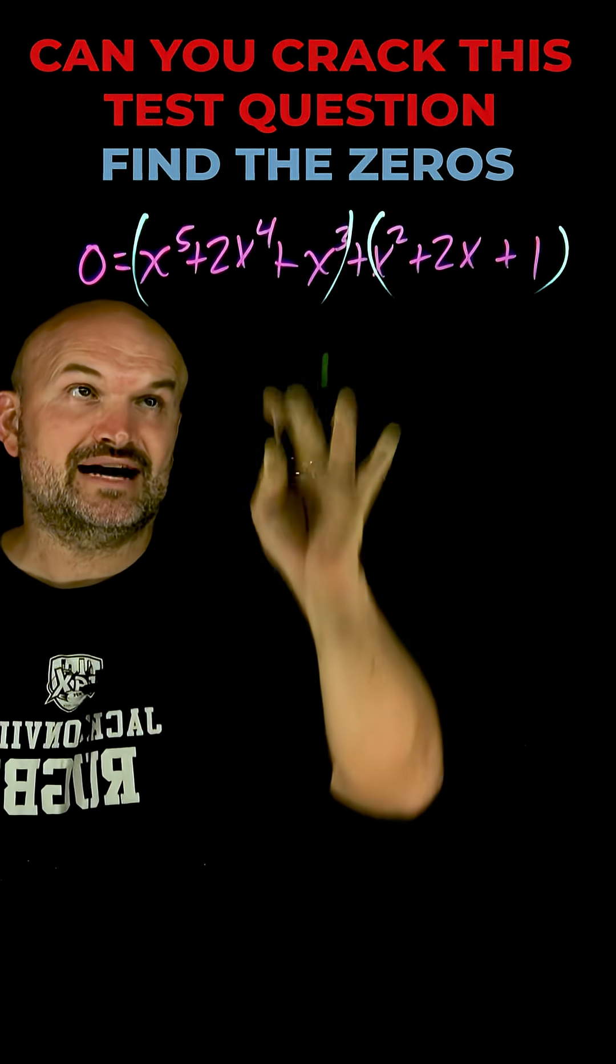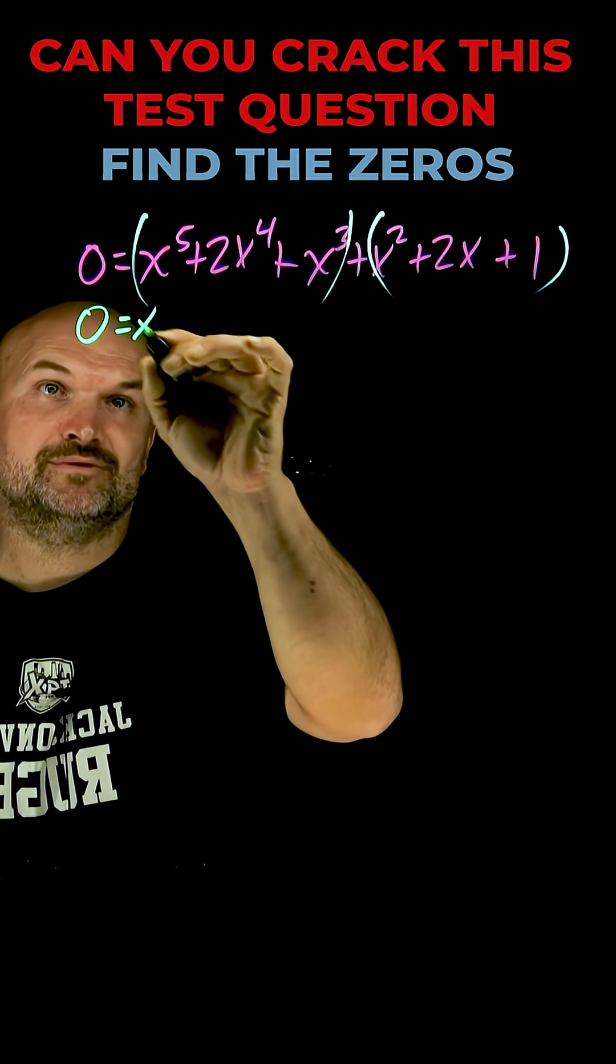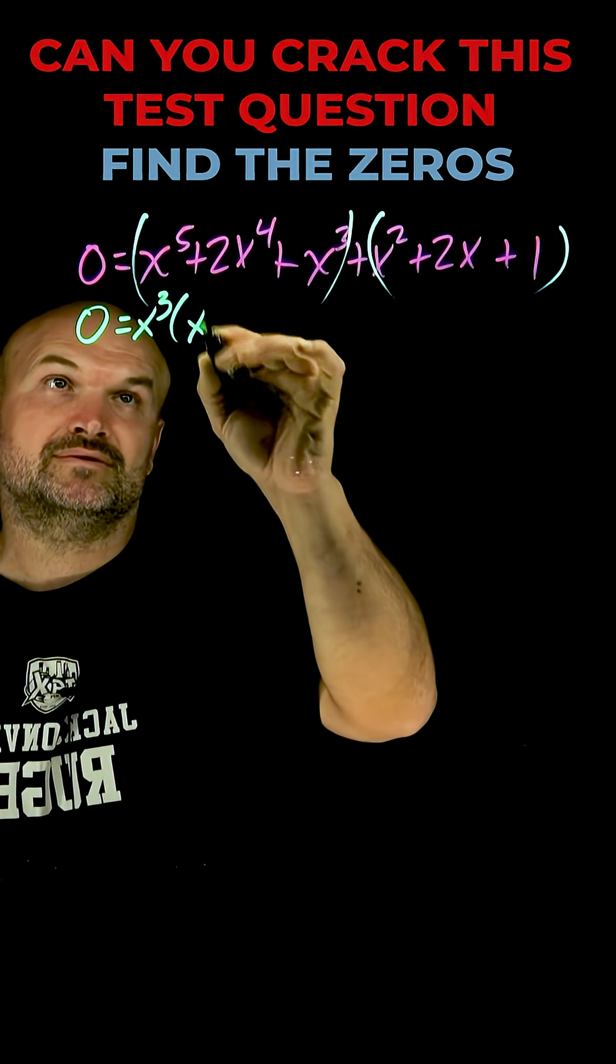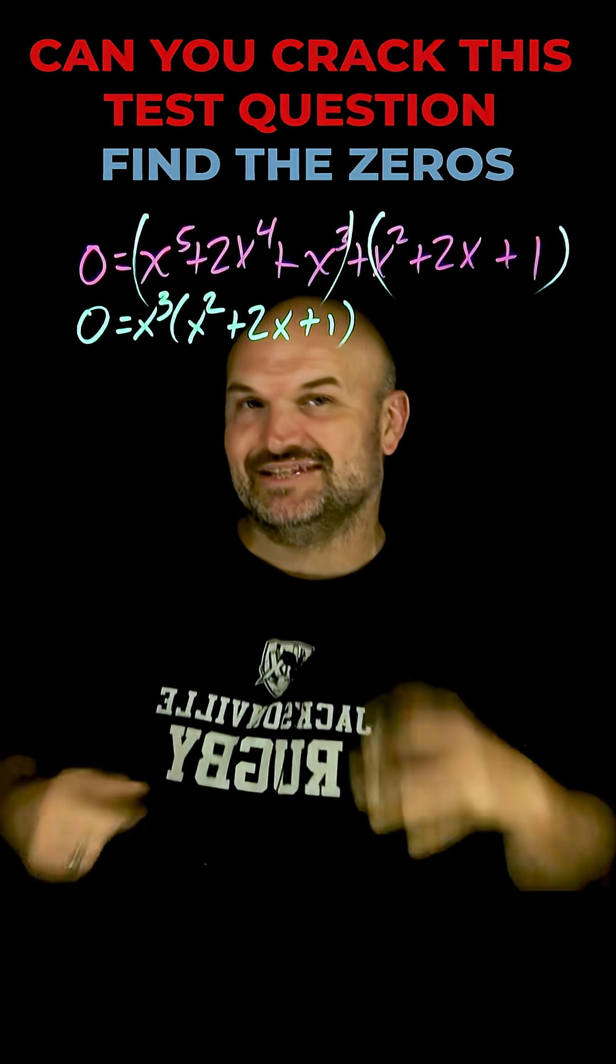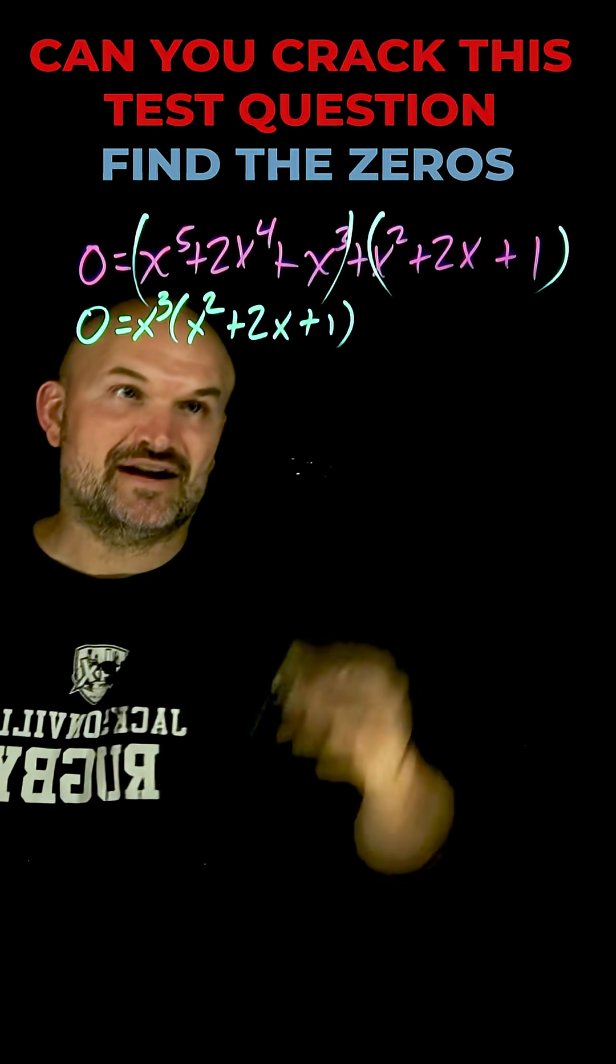Now go ahead and factor out what they have in common. Up here that's going to be an x cubed. So if I factor out x cubed I'm left with... and then over here you can see that is exactly the same as that so I just need to factor out a one.